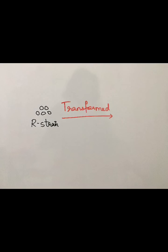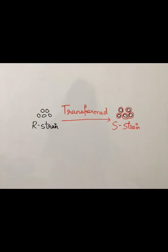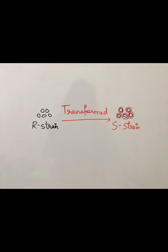He concluded that the live R-strain had transformed into the live S-strain, possibly due to the genetic material that was passed from the S-strain to the R-strain, converting the R-strain into the S-strain.